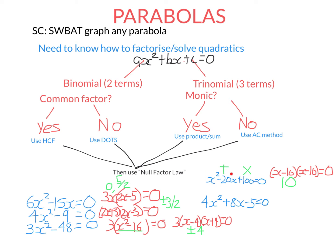When you have a perfect square like this — x minus 10 all squared — there is only one solution. Usually quadratics have two solutions, sometimes they have only one solution, and sometimes they don't have any solutions at all.